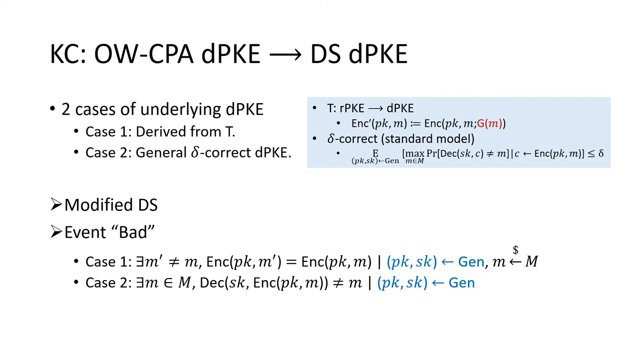Now, let's focus on the transformation KC. We analyze it in two cases of underlying deterministic PKE. The first case is that the underlying DPKE is derived from T. The second case is that it is a general direct-correct DPKE.